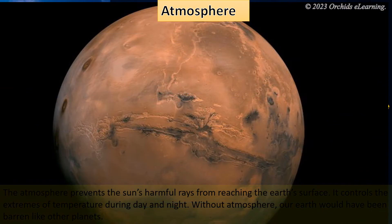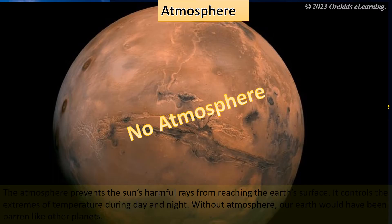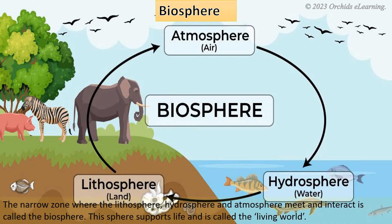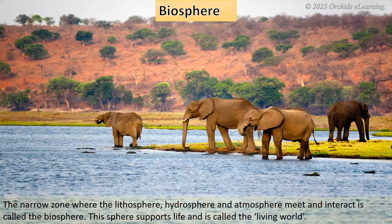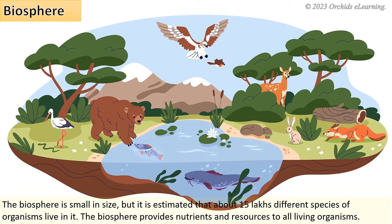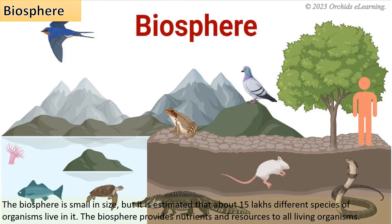Without atmosphere, our Earth would have been barren like other planets. The narrow zone where the lithosphere, hydrosphere, and atmosphere meet and interact is called the biosphere. This sphere supports life and is called the living world. The biosphere is small in size, but it is estimated that about 15 lakhs of different species of organisms live in it. The biosphere provides nutrients and resources to all living organisms.